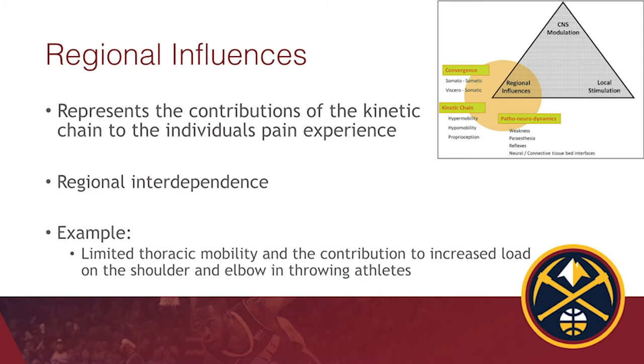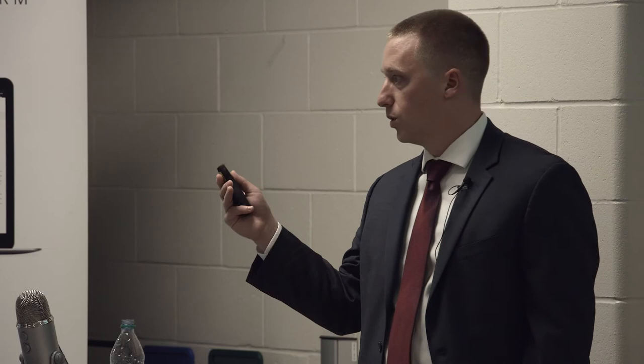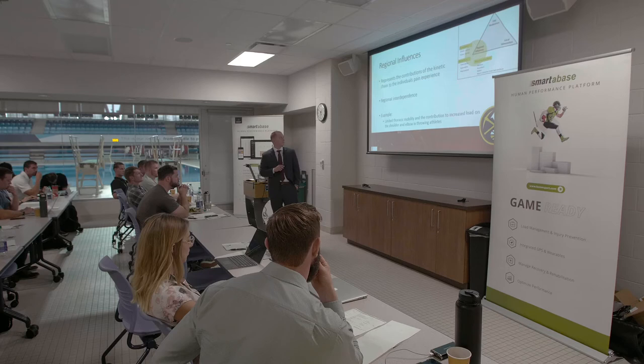The next section is regional influence — some of Yanda's work and the regional interdependence model. Does weakness, pain, or limited mobility at one area lead to increased stress and earlier nerve stimulation at another area? A classic example in a baseball player: limited thoracic mobility leads to shoulder and elbow pain because of that limitation in motion, creating overload at the shoulder, elbow, wrist, and hand from one segment not working appropriately.